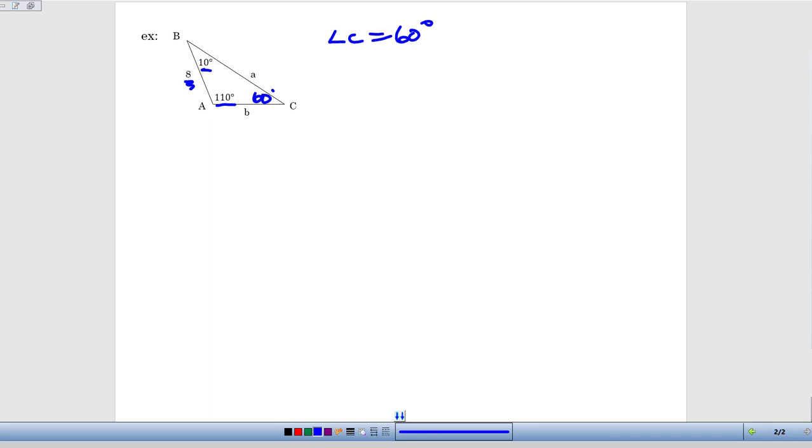And so again, it's going to be that angle-side pairing where we know both measurements, where we both know the angle and the side across from it, that is going to be the foundation for the proportions that we're going to use to solve for these other two missing sides.